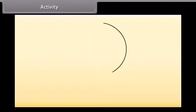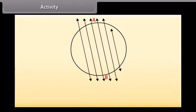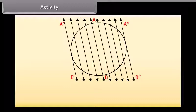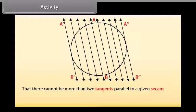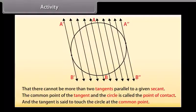To understand more about tangent, let's do an activity. Draw a circle and a secant AB of the circle. Now on both sides of the secant draw various lines parallel to it. We will find that the length of the chord cut by the lines will gradually decrease and it becomes zero on both sides of the secant. The positions AB' and AB'' of the secant are the tangents to the circle parallel to the given secant AB. We can also observe that there cannot be more than two tangents parallel to a given secant. The common point of the tangent and the circle is called the point of contact, and the tangent is said to touch the circle at the common point.